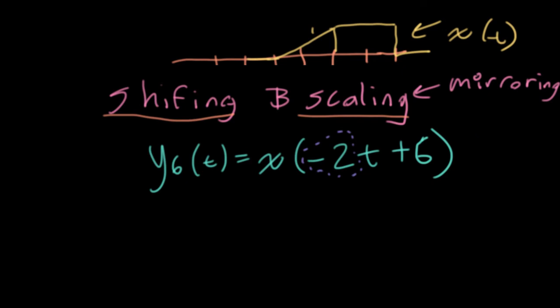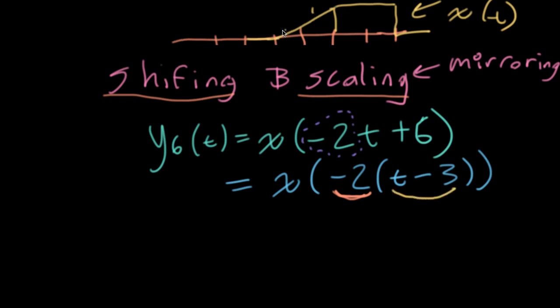The best thing to do is to take this constant that's sitting in front of the t and factor it out so you only get the t by itself. So what we'll do is we'll write this as x minus 2 times t. Okay, so what do we need to put here in order to get the 6? We would need to put a minus 3. Because now I can think about this in two stages. I can think about it first as scaling and mirroring the original function. And then I can think about it as shifting the function.